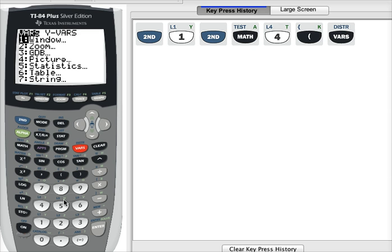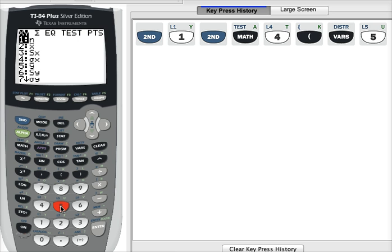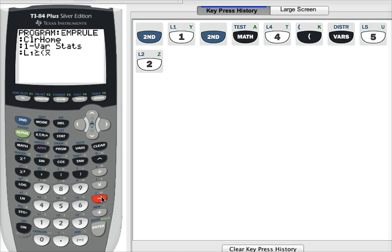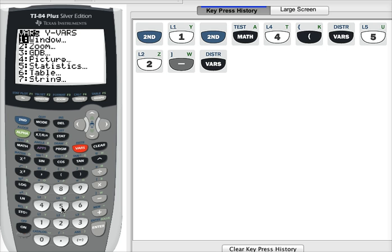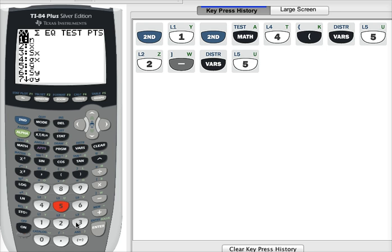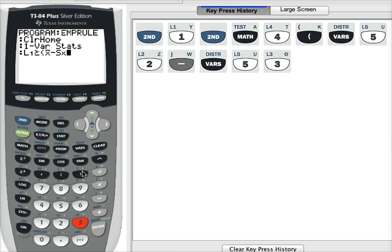Variables, option 5. Option 2 is the mean. Take away a standard deviation. Variables, option number 5. The sample standard deviation is 3. Close the parentheses.